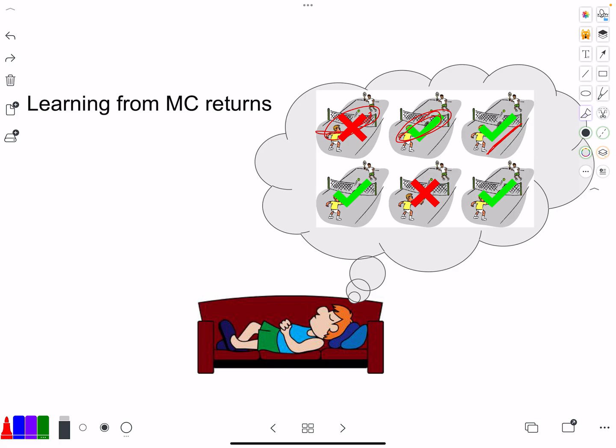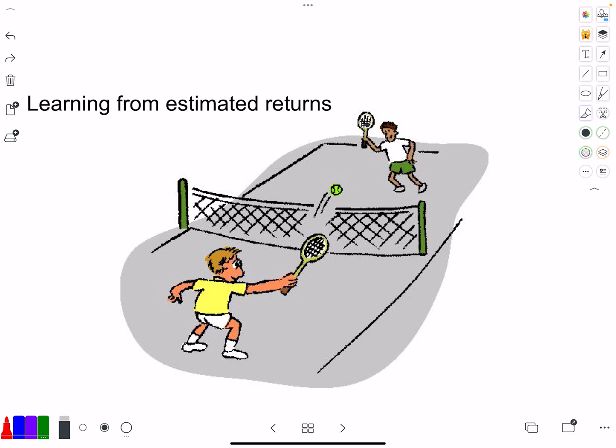And so for learning, it is often the case that we use a biased signal like so. So we move on then to estimated returns. Again, you can see the match. You can be learning inside during the match and using that for getting better and better policies.